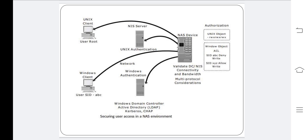Authorization defines user privileges in a network. The authorization techniques for Unix users and Windows users are quite different. Unix files use more bits to define access rights granted to owners, groups, and other users, whereas Windows uses an ACL to allow or deny specific rights to a particular user for a particular file. Although NAS devices support both of these methodologies, complexities arise when Unix and Windows users access and share the same data. If the NAS device supports multiple protocols, the integrity of both permission methodologies must be maintained.